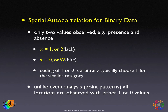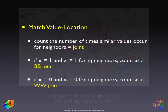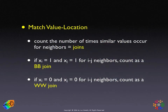As the example in this section, we'll use the presence of burglaries in neighborhoods in part of Cincinnati, Ohio. These neighborhoods have either no burglaries — there are 343 of those — or they have experienced a burglary — there are 114 of those. The light red ones are the ones with the burglaries. In a joint count statistic, we count the number of times similar values occur for neighbors, and those are called joins — hence the name joint counts.